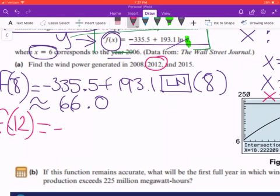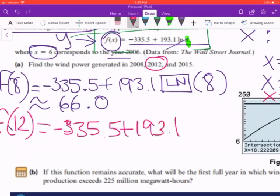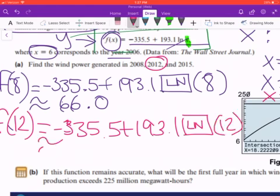We substitute x = 12 into our formula. It should be -335.5 + 193.1 ln(12). After entering this into the calculator, the value is approximately 144.3 million megawatt-hours.